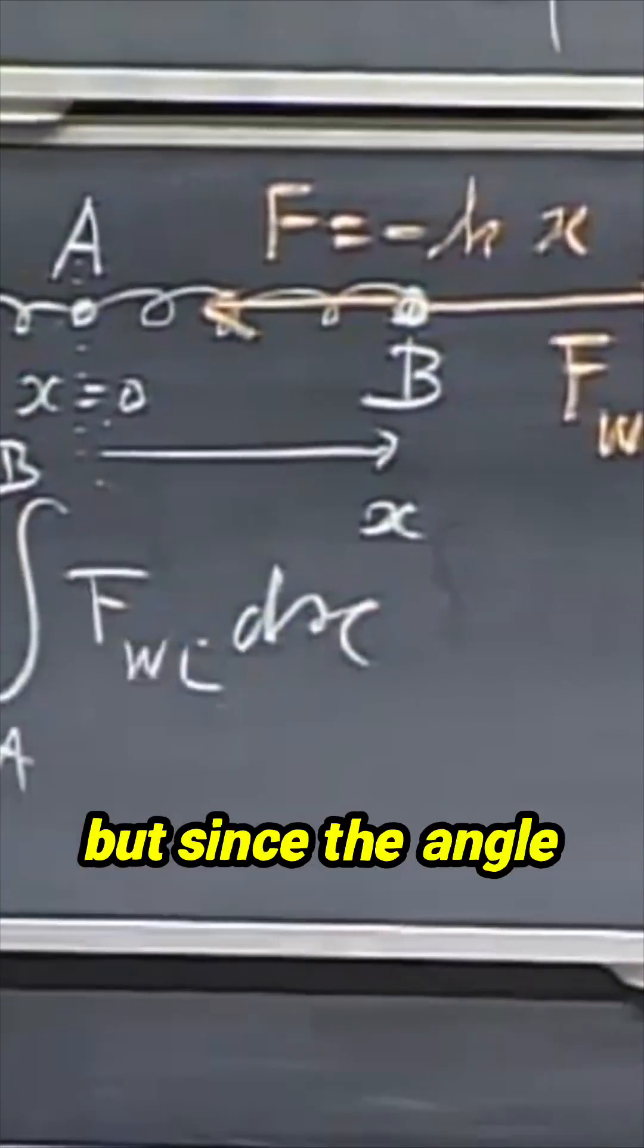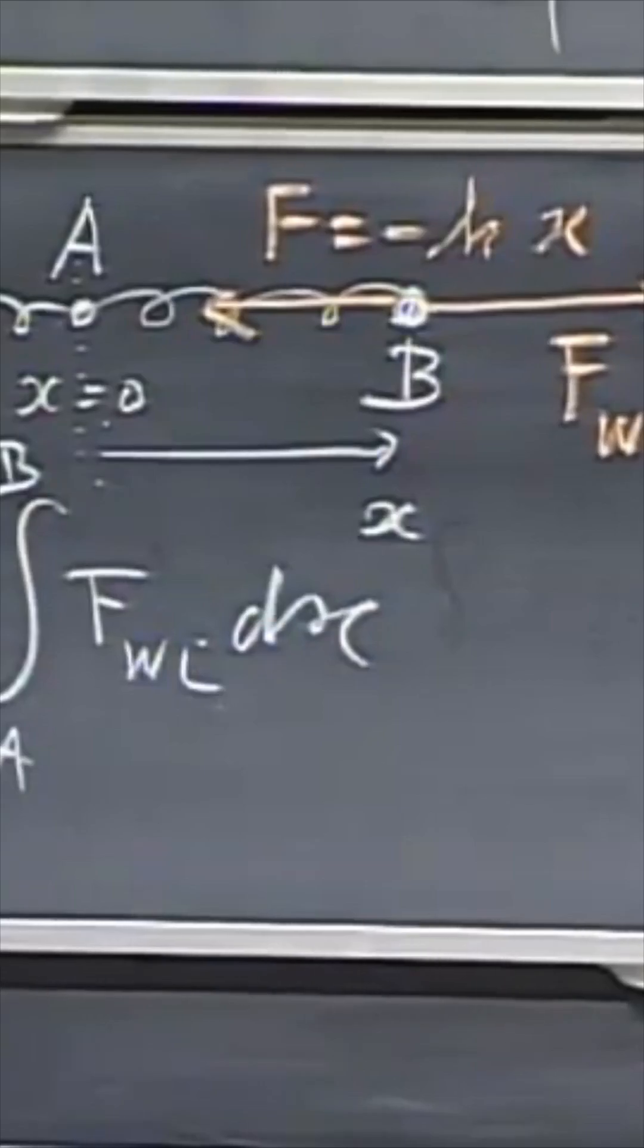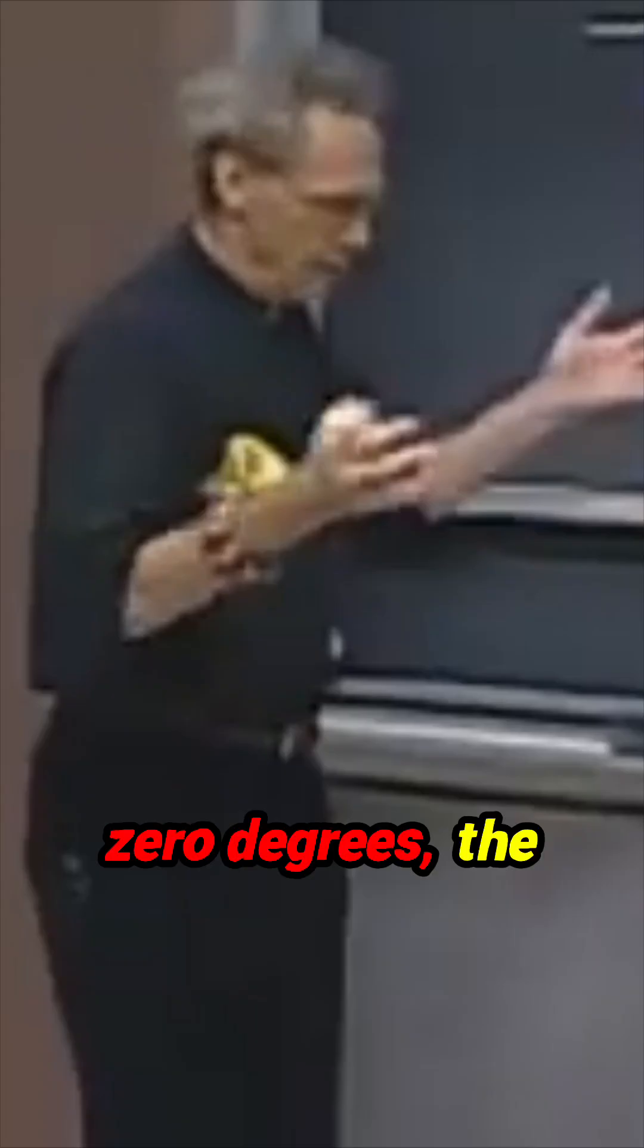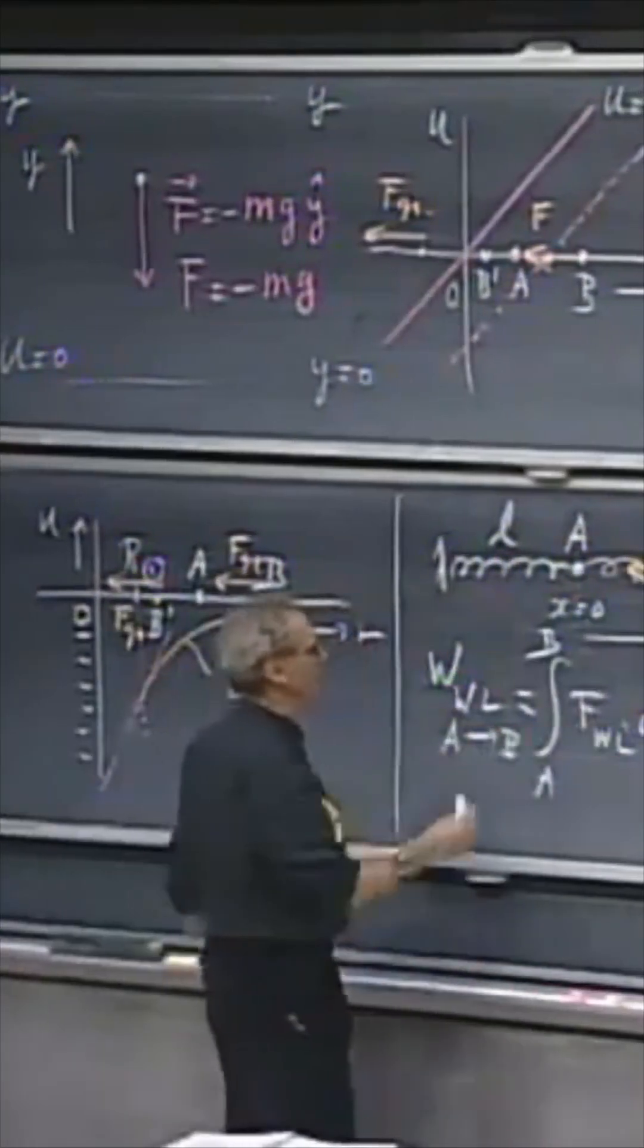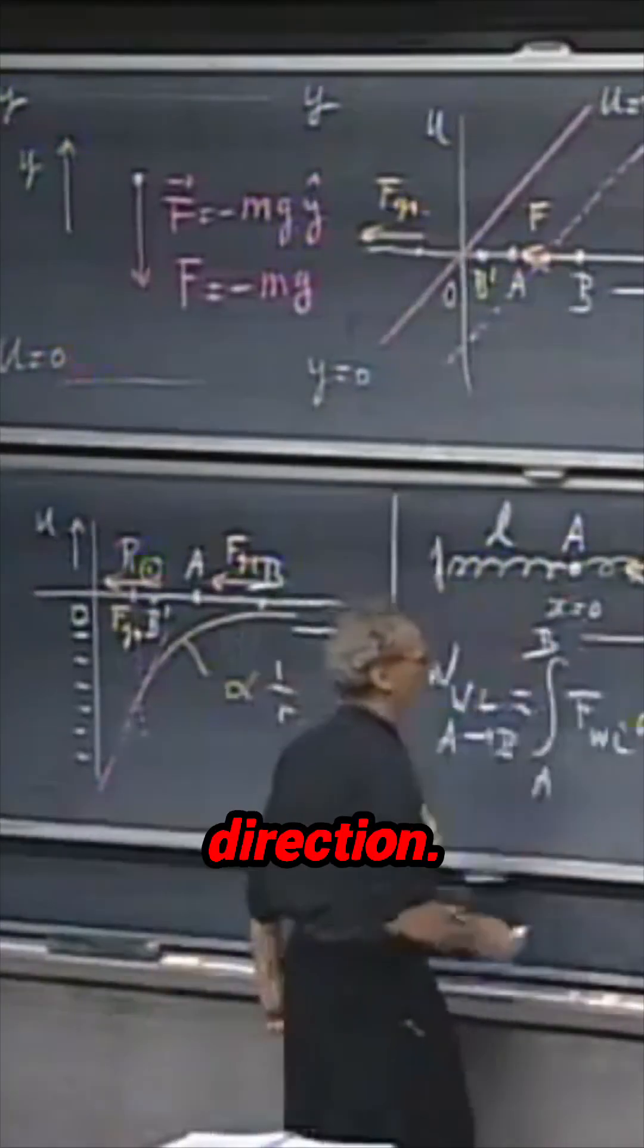It's a dot product, but since the angle between the two is zero degrees, the cosine of the angle is one, so I can forget about the fact that it's a dot product. I move it in this direction.